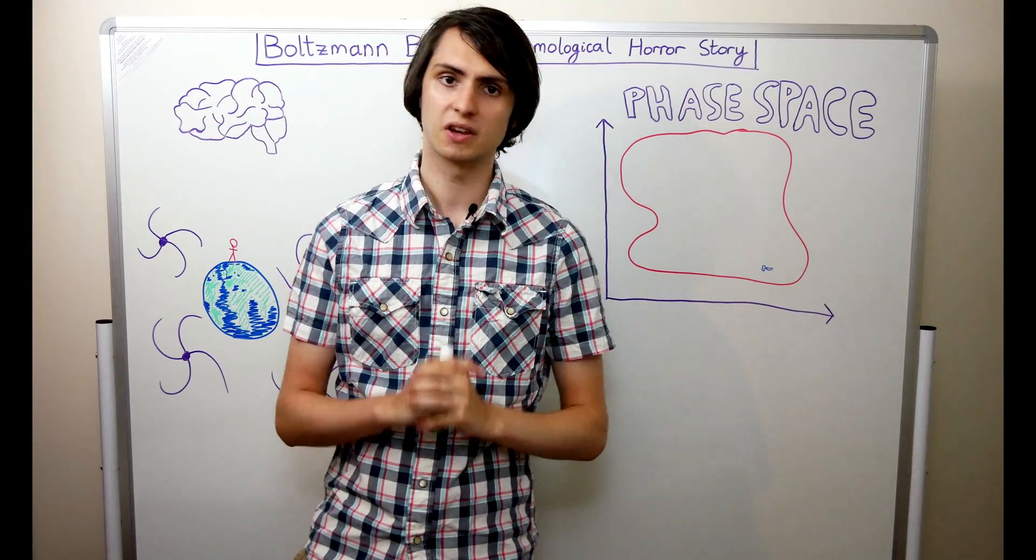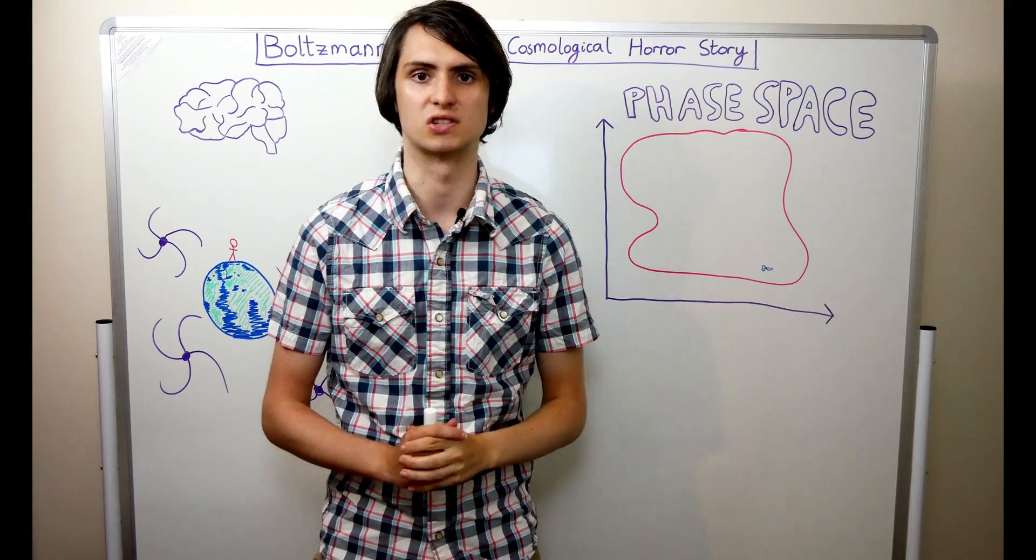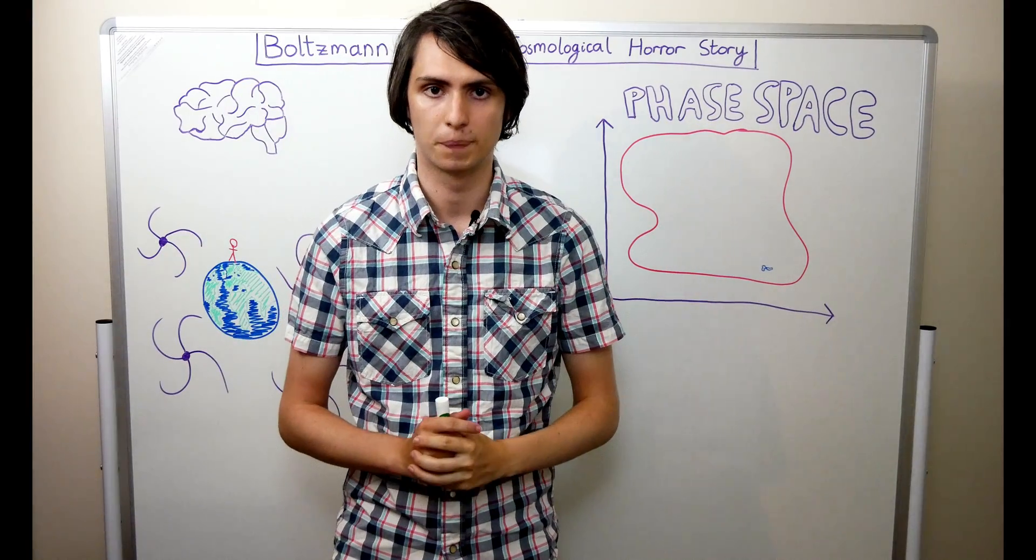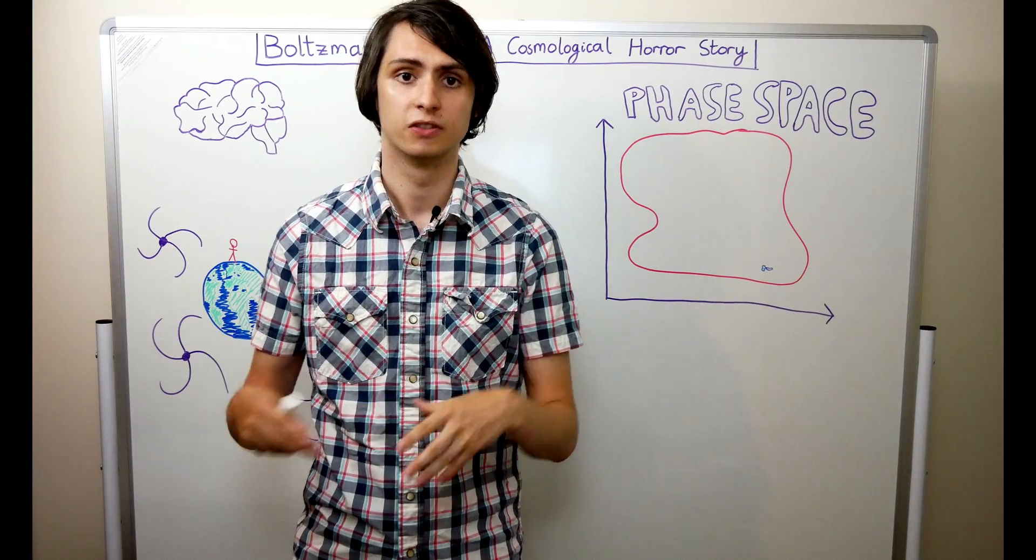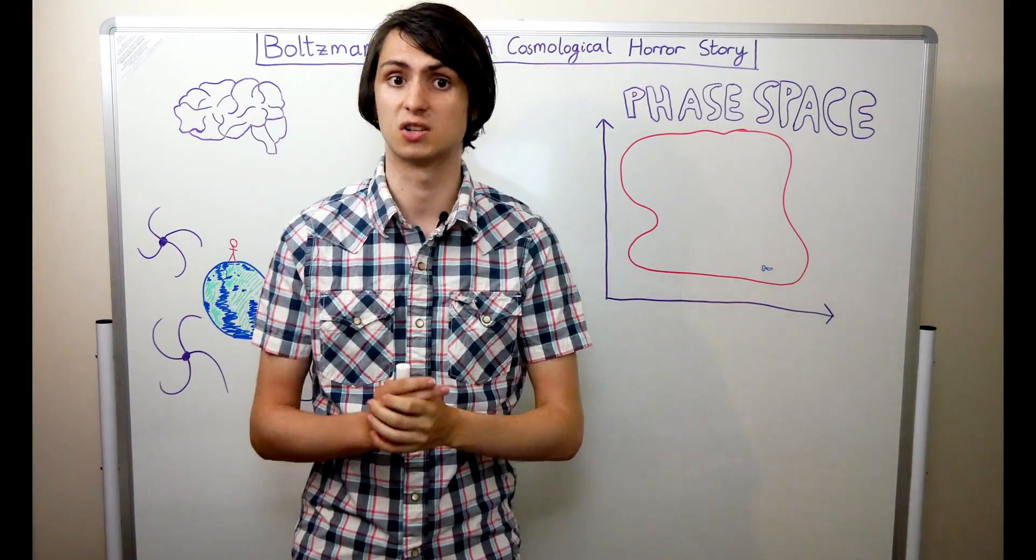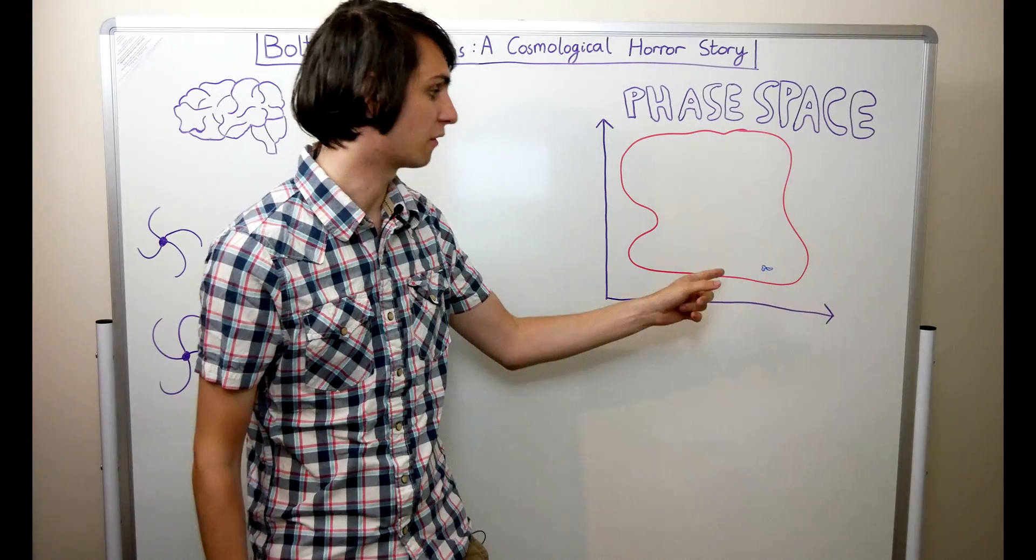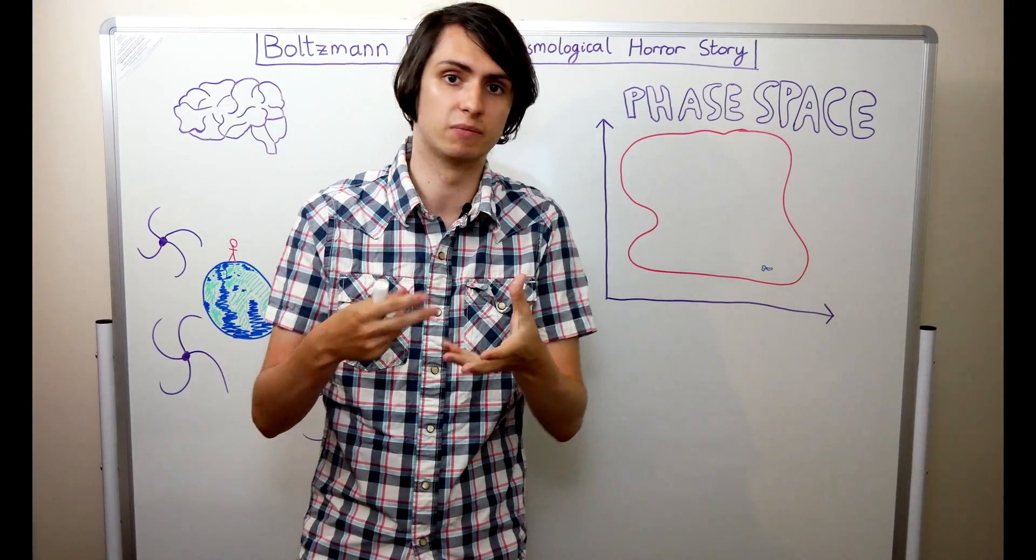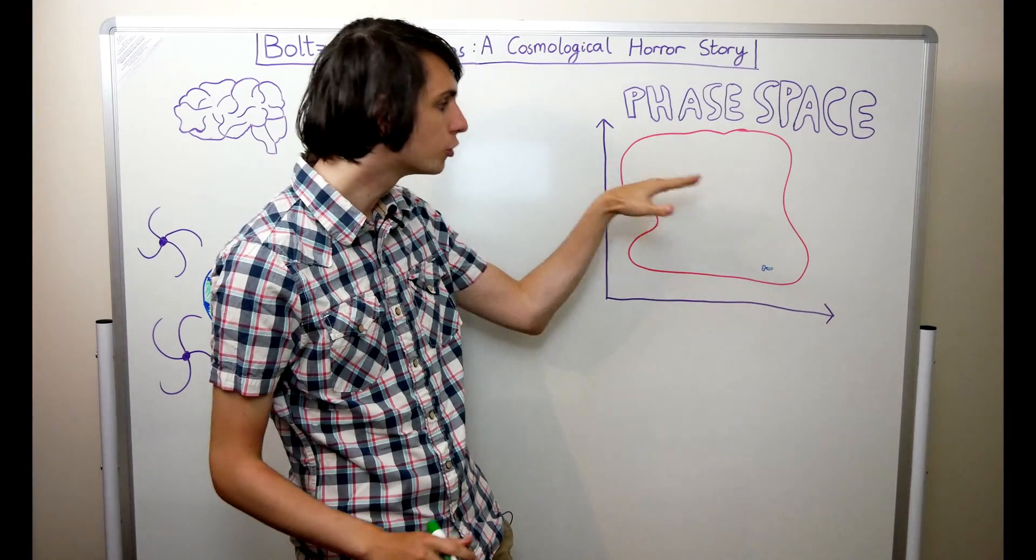We can picture this by considering something that's known as phase space. A phase space is a space of possible states that a physical system can be in. Each point in the space corresponds to a particular state of the entire system. Let's consider the phase space of a collection of sand particles evolving through time. This large red area represents all of the high-entropy states of the system, all of the states where our system is just a lump of sand particles, featureless and disorderly. The very small blue area represents all of the low-entropy states of the system, the states where we have a sandcastle or any other sand sculpture. As time passes,